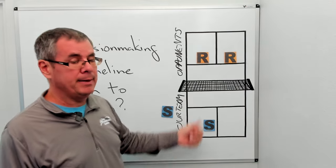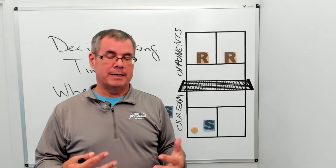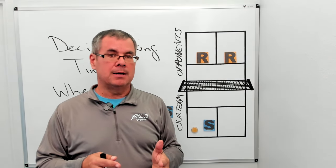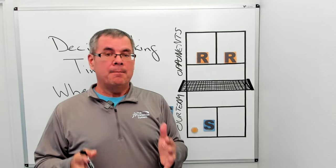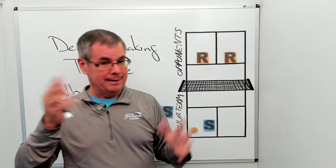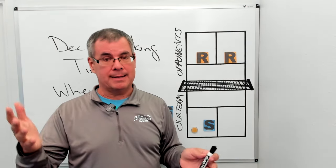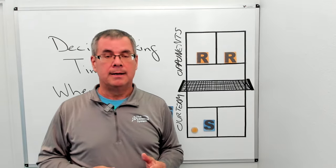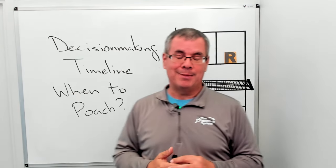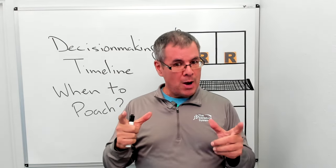That's the poach gone wrong — I came across to hit the poach and ended up hitting at my feet. What we have to determine is: was it a good decision or not a good decision at the time I made it? The poach was awful — I basically flicked it up and Stephanie put it away — but the key is to look at the decision-making timeline to explore whether it was really a bad decision.